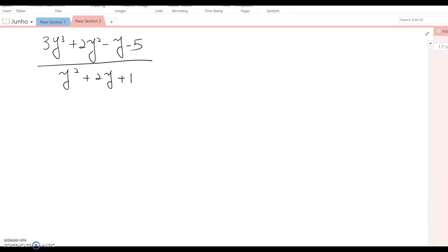The next question is 3y³ + 2y² - y - 5 over y² + 2y + 1. This question is different from the others because the numerator's degree is bigger than the denominator's degree.